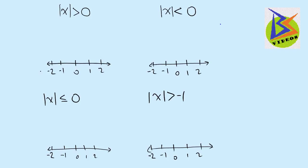Let's take a look at this first one. We have the absolute value of x is greater than zero. We can approach it like any other absolute value problem where we have case one, where the inside is positive, and case two, where the inside is negative. If we let the inside be positive we have x is greater than zero, and if the inside is negative we have negative x is greater than zero. We need to divide both sides by negative one, and when you divide by a negative it flips our inequality, so zero divided by negative one is just zero.